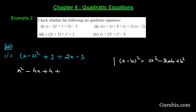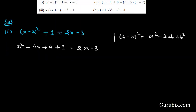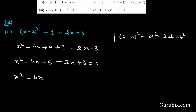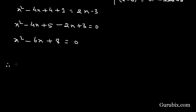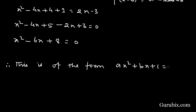We have x² - 4x + 4 + 1 = 2x - 3. Taking all values from the right hand side to the left hand side, we get x² - 4x + 5 - 2x + 3 = 0, which simplifies to x² - 6x + 8 = 0. We observe that this is of the form ax² + bx + c = 0.